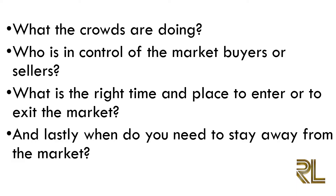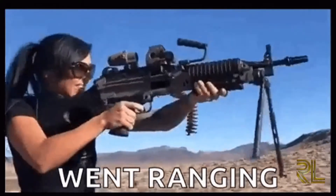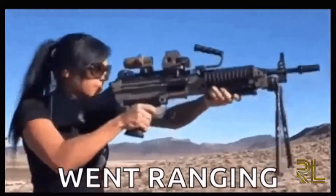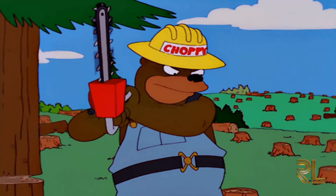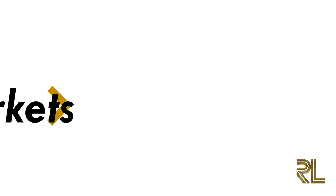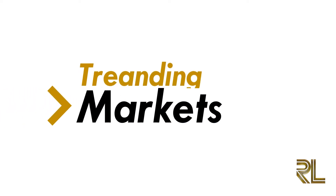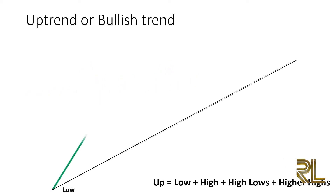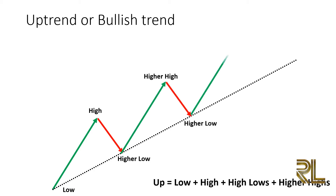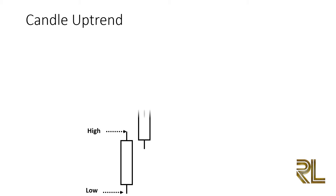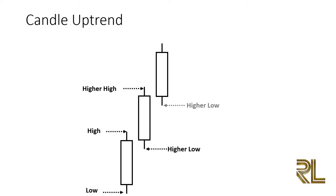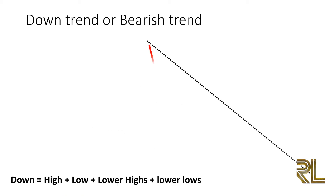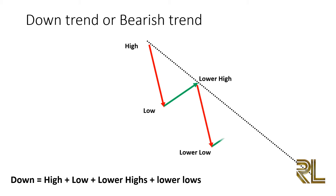Through your price action analysis you will experience three types of markets: trending markets, ranging markets, and choppy markets. The first type we are going to learn is a trending market. Trending markets are simply characterized by a repeating pattern of higher highs and higher lows in an uptrending market, and lower highs and lower lows in a downtrending market.